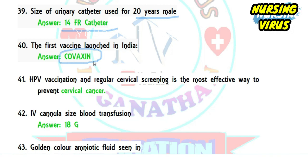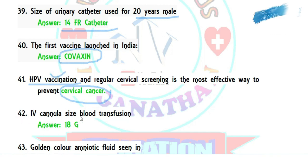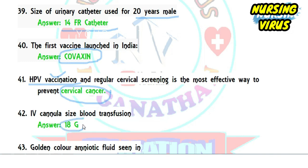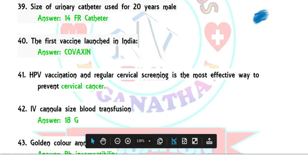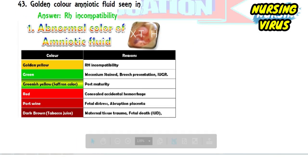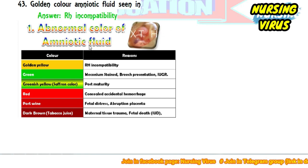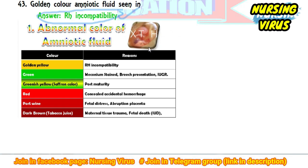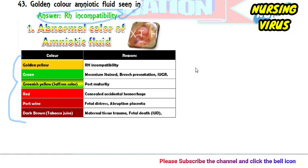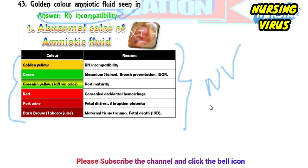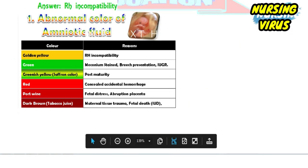Question 40: the first vaccine launched in India was Covaxin, the first brand approved for the Indian population. Question 41: the HPV vaccine is given to prevent cervical cancer. Question 42: the IV cannula size recommended for blood transfusion is 18 gauge. Question 43: golden-colored amniotic fluid is commonly seen in Rh incompatibility. Various amniotic fluid color codes have been discussed previously on the Nursing Virus channel.